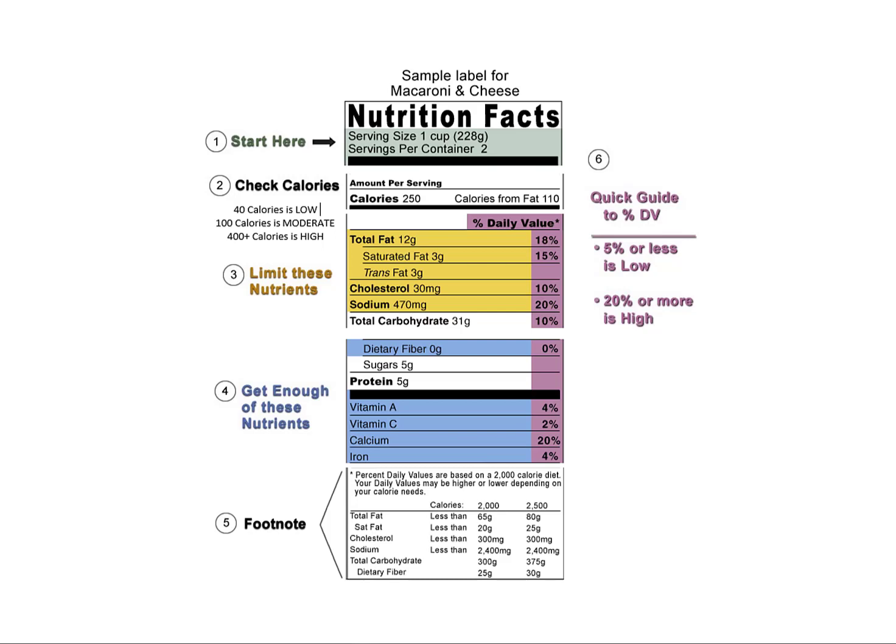That student was quite overweight, but because of the course he lost the weight and I still correspond with him to this day — it's pretty cool that he permanently lost the weight. Looking at this label, you can see trans fat listed as 3 grams per serving — with two servings that's really 6 grams, and you want none.